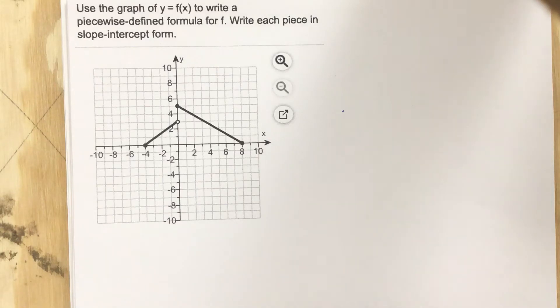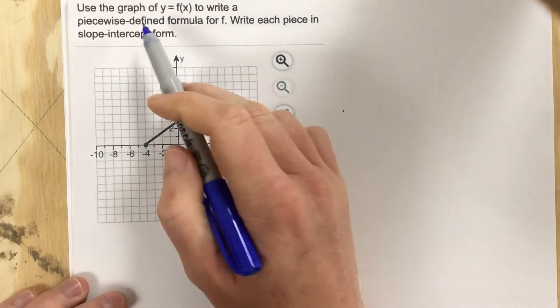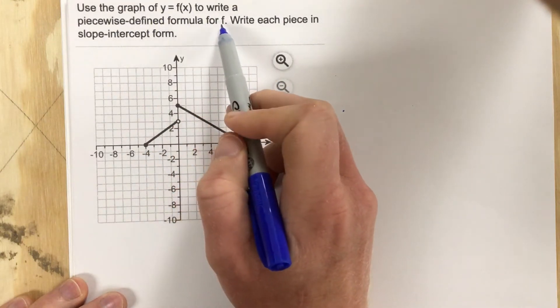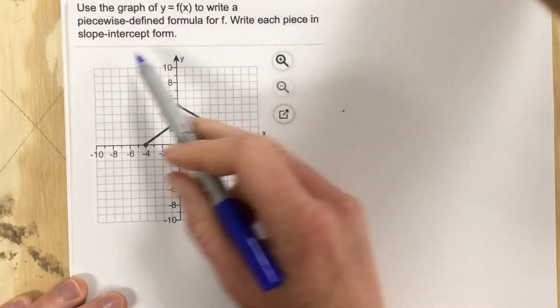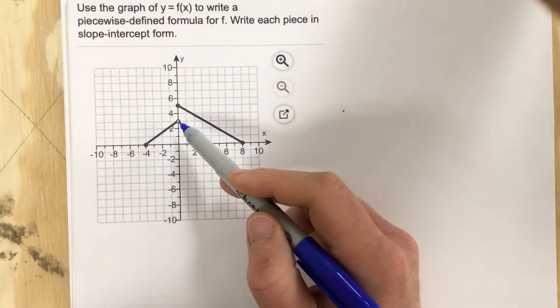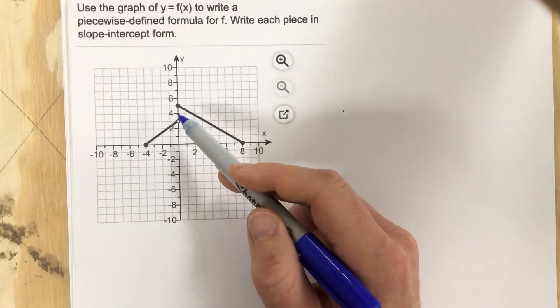This is problem number one for assessment number seven. In this problem they say use the graph of y equals f of x to write a piecewise defined formula for f. Write each piece in slope-intercept form. We can clearly see that this is a piecewise function. We've got a gap in the middle, so we have a jump discontinuity.